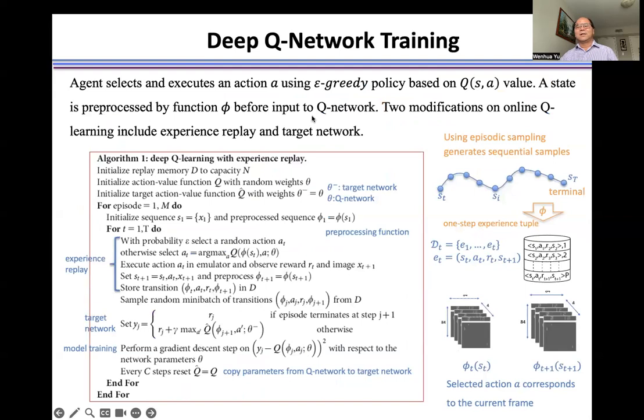To train the Q network, we need to use the episodic sampling to generate sequential samples here from a current state to the terminal state. To get stable model training, we need to separate these sequential samples into one-step experience tuples.